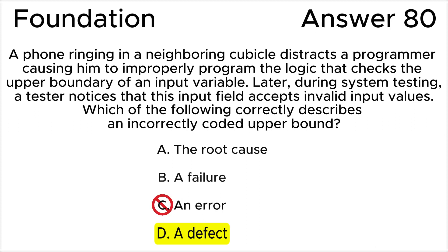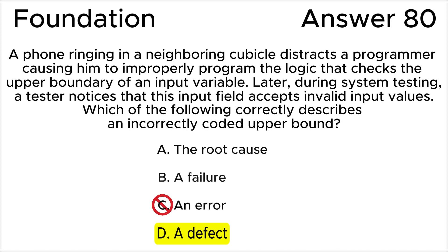Answer C is incorrect, because the error is the mistaken thinking that resulted in putting the defect in the code. The programmer's distraction leading to the incorrect coding of the upper boundary check represents an error. The error is the human action — the distraction — that results in the defect, the improperly coded logic, which in turn leads to the failure observed during testing: the input field accepting invalid values.